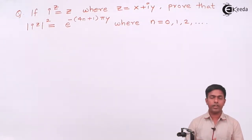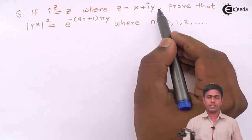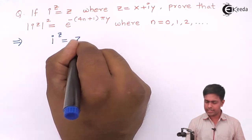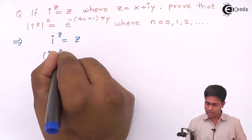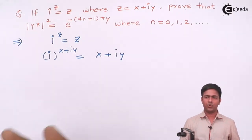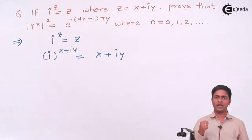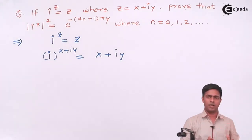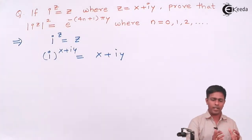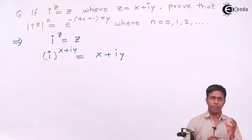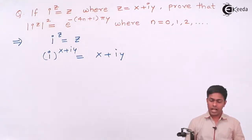Let's observe one thing: z is given as x plus iy. So we start with i to the power of x plus iy equals x plus iy. On the right-hand side is a complex number in standard form with one real and one imaginary part. On the left-hand side is a complex number raised to a complex number, which we follow certain steps to handle: convert the base into exponential form and keep the exponent in Cartesian form.